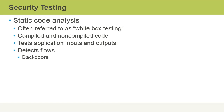A static code analysis is another part of security testing for an app, which is often called white box testing. This will apply to both compiled as well as non-compiled code. It tests applications' inputs as well as the outputs, depending on what was fed into the app. It's used to detect flaws, including things like backdoors. Backdoors allow a malicious user into the application with escalated privileges without the system owner's knowledge.